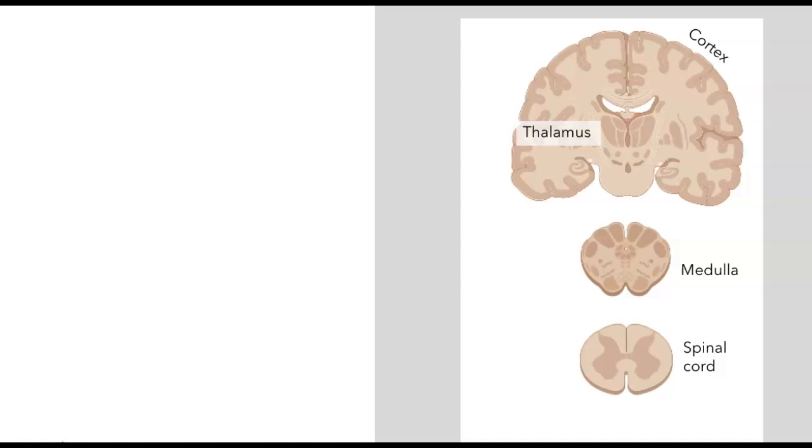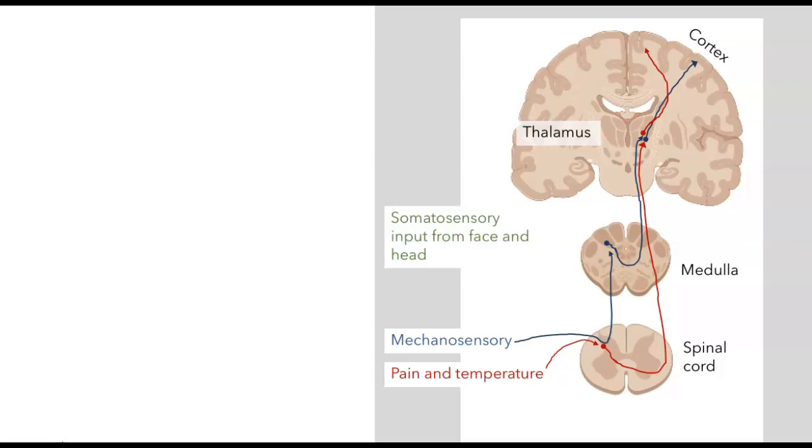I'm just going to remind you of some of the ascending somatosensory pathways. Pain and temperature enter through the spinal cord in the spinothalamic pathway and travel up to the thalamus, and some of those inputs continue on to the cortex. A lot of them don't, but some do. Mechanosensory information travels through the dorsal column medial lemniscal pathway and also reaches the cortex. Finally, somatosensory input from the face and head also projects to the thalamus and from there to the cortex.